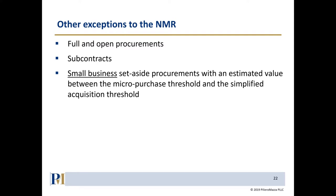To clarify: the non-manufacturer rule and the manufacturer rule are used for set-aside prime contracts. If the prime contract is not set aside for small businesses — what we call full and open competition or unrestricted — then there is no non-manufacturer requirement.